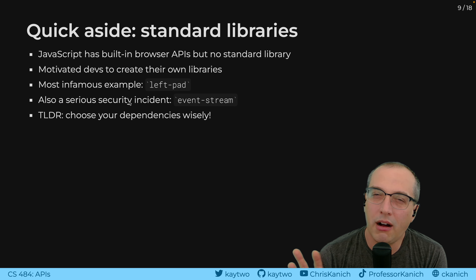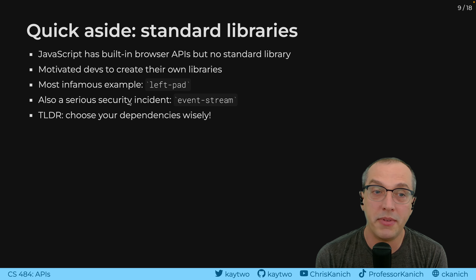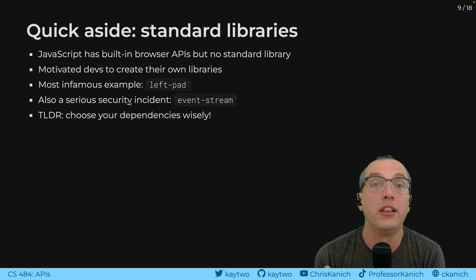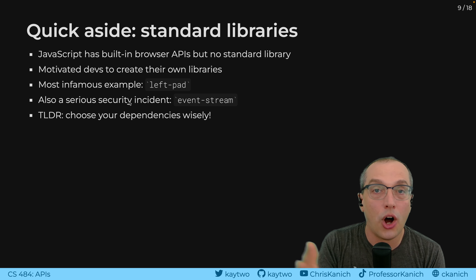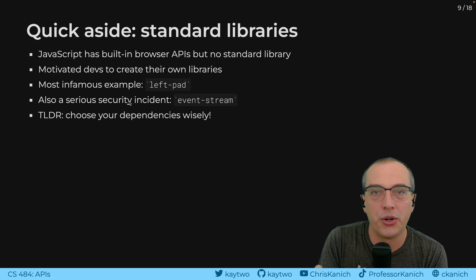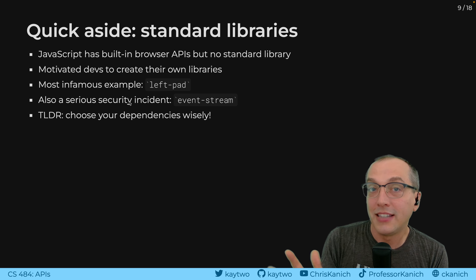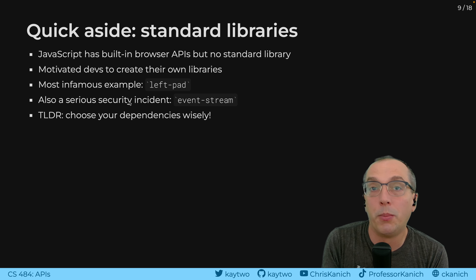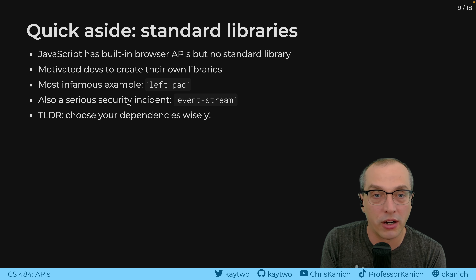As a quick aside — not 100% about APIs but an important part of web development — JavaScript itself doesn't have a standard library the same way C or Python do, where the language says: here are utility functions that are just there as part of the language runtime, no download required. This has led to some interesting situations and is part of why the Node Package Manager is so incredibly popular. People need to bring in third-party libraries to make their code work, and so they build all sorts of different things.